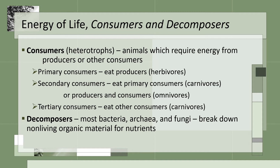Organisms which cannot produce their own energy via photosynthesis must obtain or consume energy from another source. These are known as consumers or heterotrophs, meaning they feed from other sources. There are three main levels. Organisms which only eat plants, known as herbivores such as rabbits, are also known as primary consumers. Anything that eats a primary consumer is called a secondary consumer; these can be carnivores such as a fox, or omnivores that eat both plants and animals such as a bear. Then there is the tertiary or third-level consumer, which are strictly carnivores such as a tiger. Once all of the energy has traveled from the sun, through the plants, through the various consumers, eventually there is something left behind — a dead plant or the remains of an animal. This is where decomposers are important; they further break down the organism, releasing nutrients back into the ground to be used again by plants.